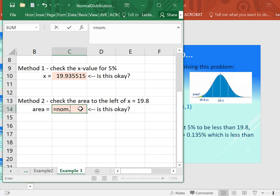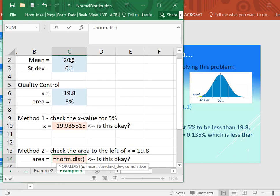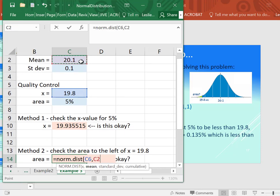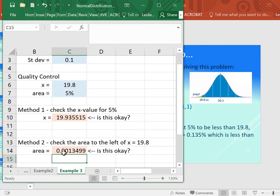So we use the norm.dist, and we grab the 19.8 for our x value, 20.1 for our mean, standard deviation at 0.1, and put in the comma 1. And here we are, here's our answer. So is this okay?